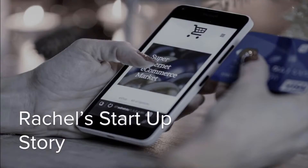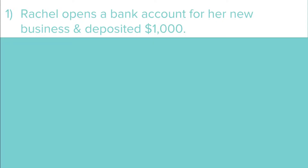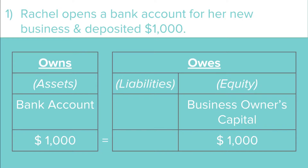To keep things interesting, let's walk through the story of Rachel's startup. As the business is brand new, it does not own or owe anything at all — it's zero. Rachel opens a bank account for her business and deposits $1,000 from her own money. The business's bank balance increases by $1,000, while the equity increases by $1,000 as capital. What the business owns is $1,000 and what it owes is $1,000 — it remains balanced.